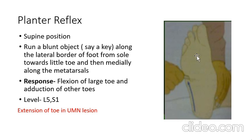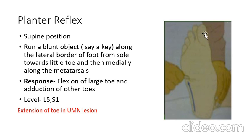The level is L5-S1. If there is extension of the toe and dorsiflexion in the opposite direction — toward the hand — that dorsiflexion is present in upper motor neuron lesion.